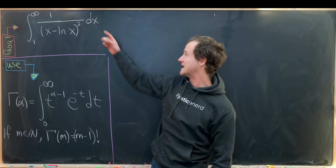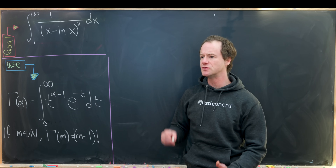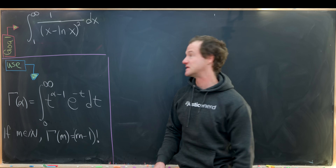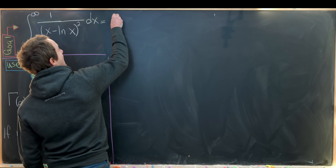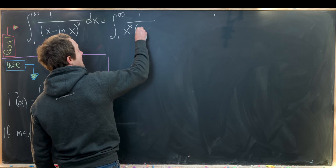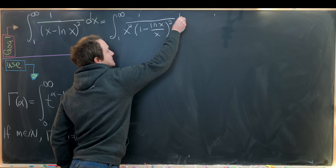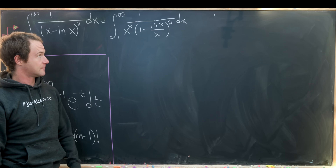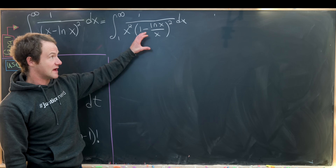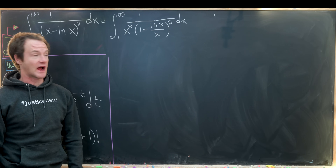We just showed that this integral converges, and now we're ready to express its value as an infinite series. We rewrite it as the integral from 1 to infinity of 1/x² times 1 over (1 minus ln(x)/x)² dx, because ln(x)/x is always between 0 and 1, so it's always in the radius of convergence of the relevant power series.